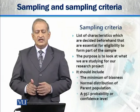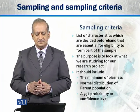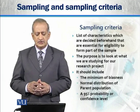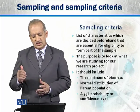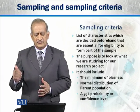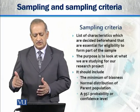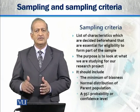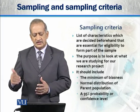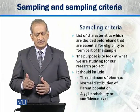Sampling Criteria is a list of characteristics which are decided beforehand that are essential for eligibility to form part of the sample. There is a list of characteristics decided beforehand — these are the things we have decided to study. This is sampling criteria. What is its purpose?